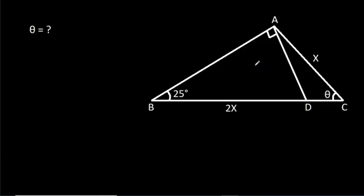In this video, we have been given that AC is X, BD is 2X, and angle BAD is 90 degrees, angle ABC is 25 degrees, and angle ACB is theta. We have to find theta.